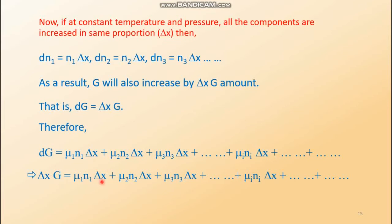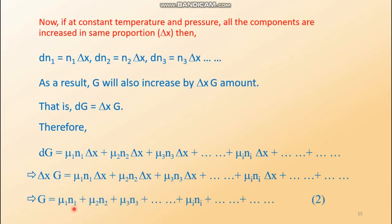After cancelling delta x, only G remains on the left-hand side and the remaining parameters stay on the right-hand side. This gives equation number two: G equals μ1·n1 plus μ2·n2 plus μ3·n3 plus dot dot dot, which can be written as the summation over i of μᵢ·nᵢ.